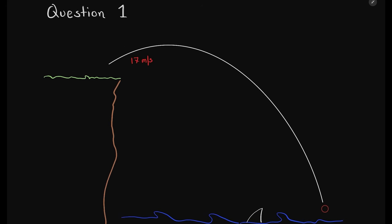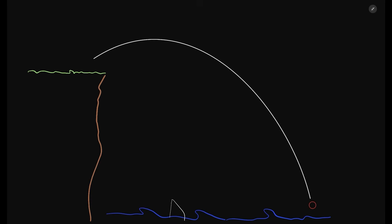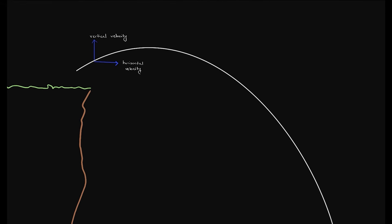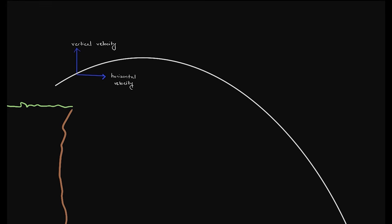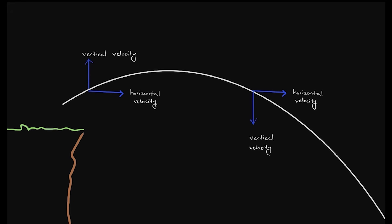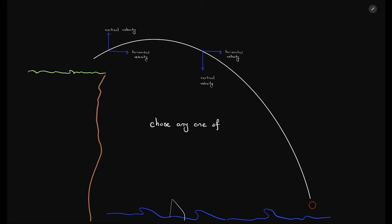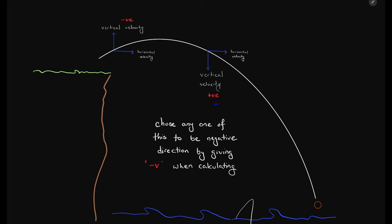Here you can see a ball has been thrown away from the cliff at 17 meters per second. At the beginning, the vertical velocity is pointing upwards, and after a while, the vertical velocity is pointing downwards. As velocity is a vector quantity, we can choose any one of these to become negative by using negative V while calculating. As gravity pulls downwards, vertical velocity moving down will increase. That is why I prefer using positive values pointing downwards, and the vertical velocity moving upwards is given a negative value.